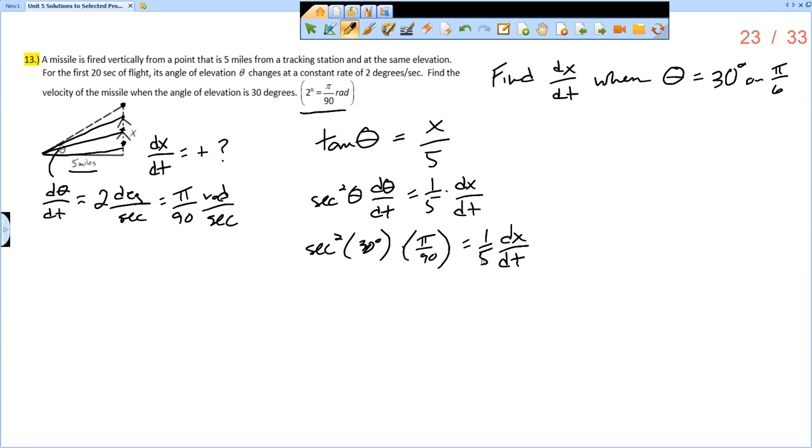And so dx dt is going to be this thing times 5. So dx dt is going to be 5 times the secant squared of 30 degrees.